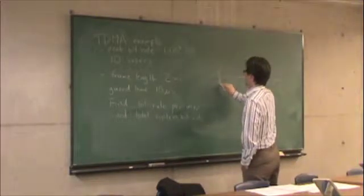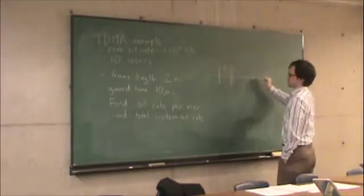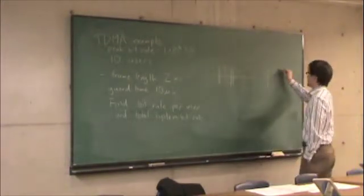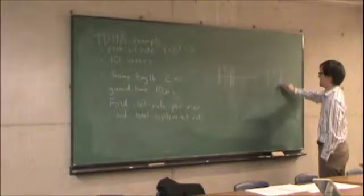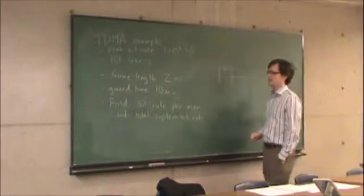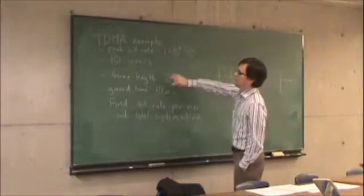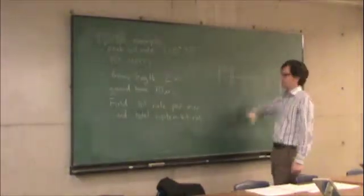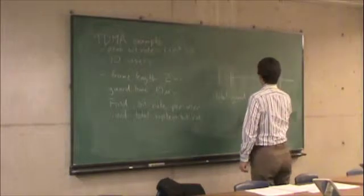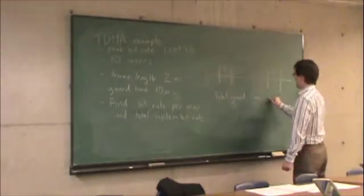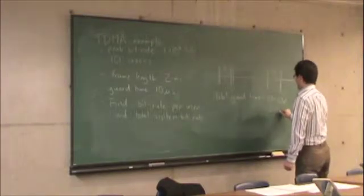So if user 1 goes, then we have 10 microseconds, then user 2 goes, then we have 10 microseconds, up to user 10. We'll assume that user 10 adds an extra guard time at the end before user 1 starts again. So the number of guard times equals the number of users. The total guard time is 10 users times 10 microseconds per user, which is 100 microseconds.